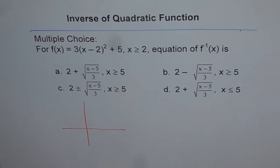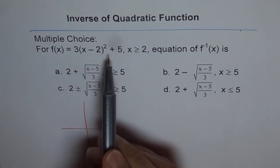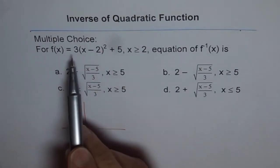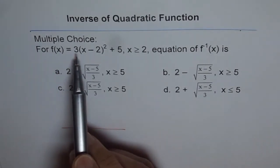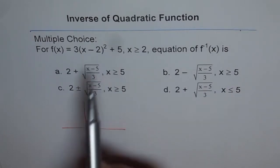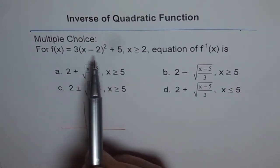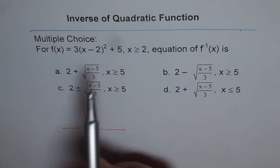The function is 3(x minus 2) whole square plus 5. Since this is positive, we have a parabola which opens upwards. Therefore, range is going to be greater than or equal to 5, and domain is all real numbers.